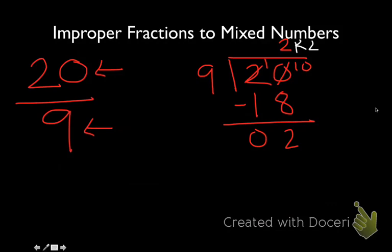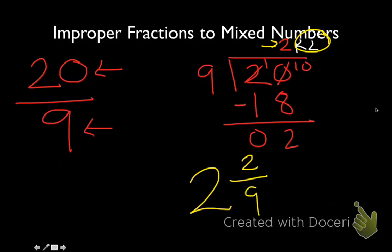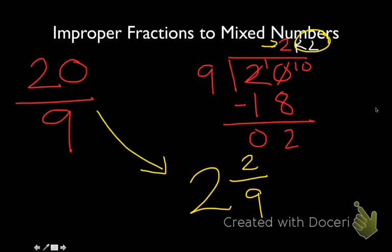For us to change this into a mixed number, we'll take the quotient, 2, and that will be our whole number. Then we'll take our remainder, also 2, and write that as a fraction where 2 is the numerator, written over our original denominator of 9. So 20 ninths into a mixed number becomes 2 and 2 ninths, or 2 wholes and 2 ninths.